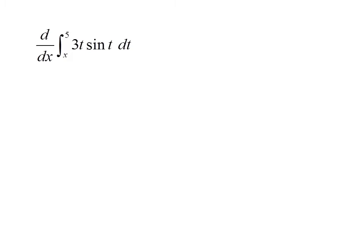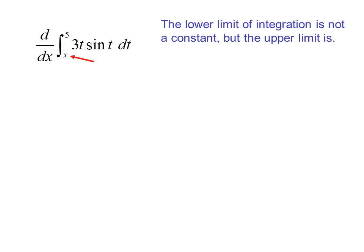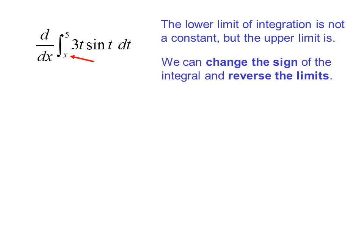d/dx of the integral from x to 5 of 3t·sine(t) dt. The lower limit of integration is not a constant, but the upper limit is. We can change the sign of the integral and reverse the limits — the negative sign moves to the outside. Now we have d/dx of the integral from 5 to x of 3t·sine(t) dt, and we meet all three requirements for the first fundamental theorem. So we get negative 3x·sine(x).